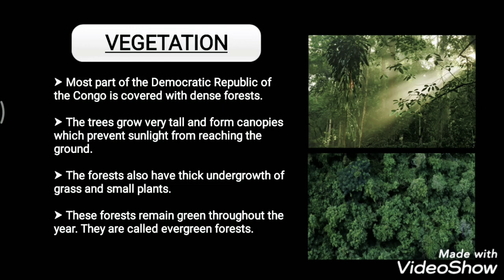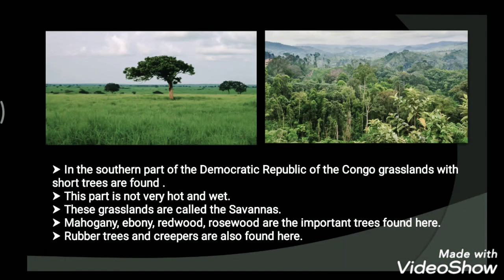The forests have thick undergrowth of grasses and small plants, and remain green throughout the year — they are also called evergreen forests. In the southern part of Congo there are grasslands with short trees called savannahs. Important trees found here include Mahogany, Ebony, Mercury, and Dewarous, along with rubber trees, creepers, and climbers.